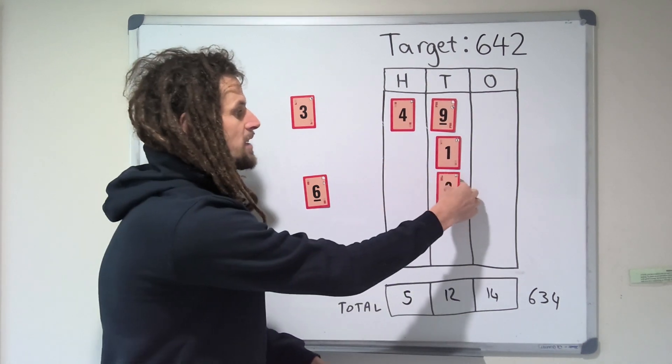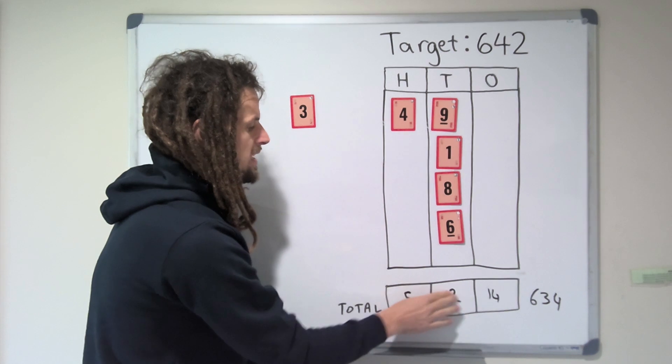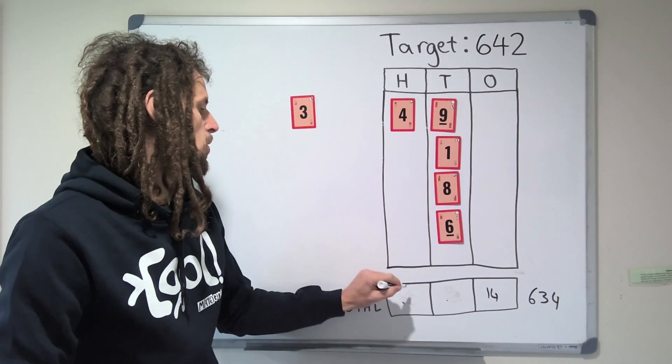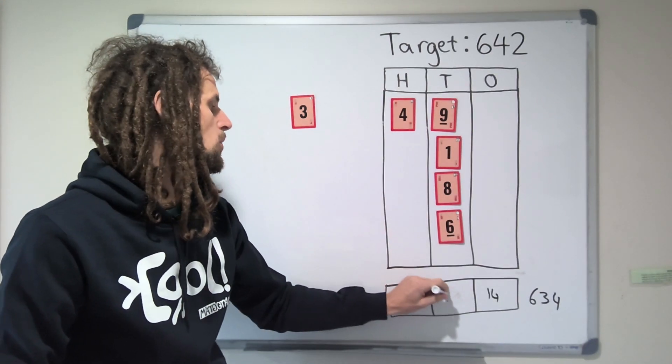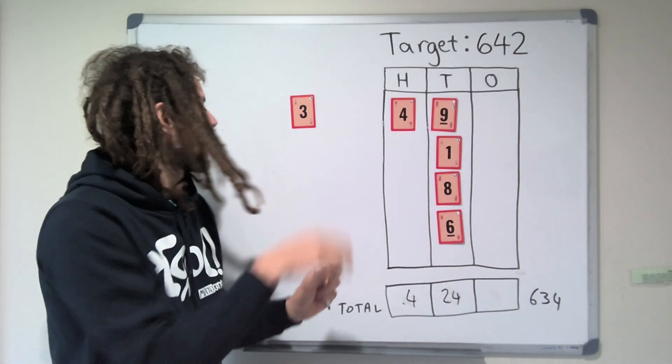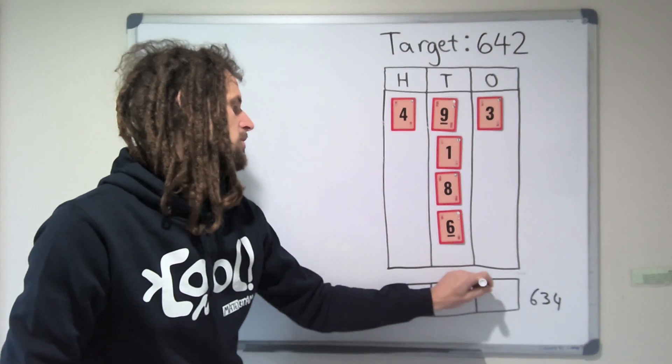And then if we put these two in as well, this is going to make another 140. So here, we've now got 4 hundreds, and we've got 24 tens, so that's 640. And then the three left over makes 643.